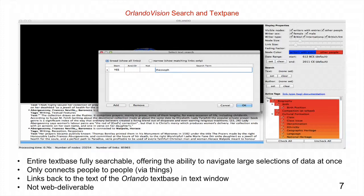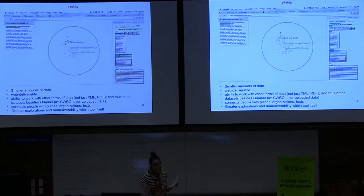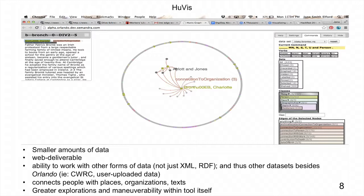That brings me to the next tool we developed, which is HueViz. It similarly maps the connections between individuals and groups, but connects not only people to people, but also people to places, organizations, and texts. It also has the ability to be used with other kinds of data sources — not just XML, but also RDF. We're hoping to have this as a tool that links into Quirk, which Cecily is going to talk about later, and enables you to input your own data into this tool.